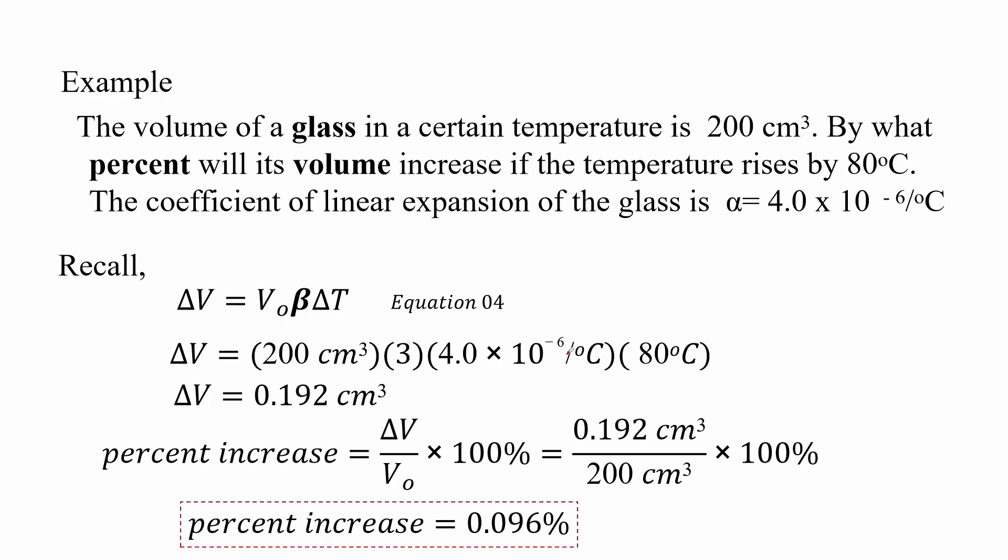Here we have an example on volume expansion. The volume of a glass in a certain temperature is 200 centimeter cubed. By what percent will its volume increase if the temperature rises by 80 degrees Celsius? The coefficient of linear expansion of the glass is α = 4 × 10⁻⁶ per degree Celsius.